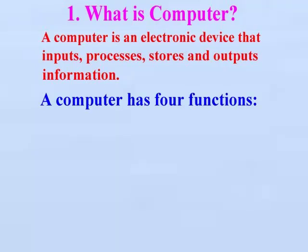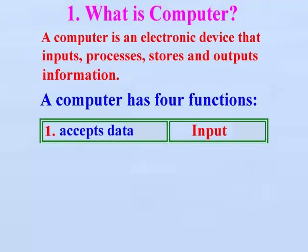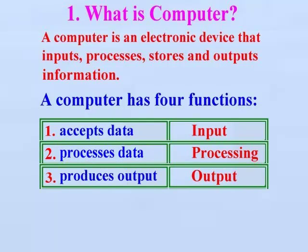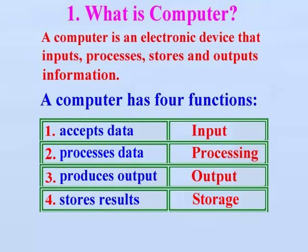A computer has four functions. Number 1: Accepts data — Input. Number 2: Processes data — Processing. Number 3: Produces output — Output. And number 4: Stores results — Storage.